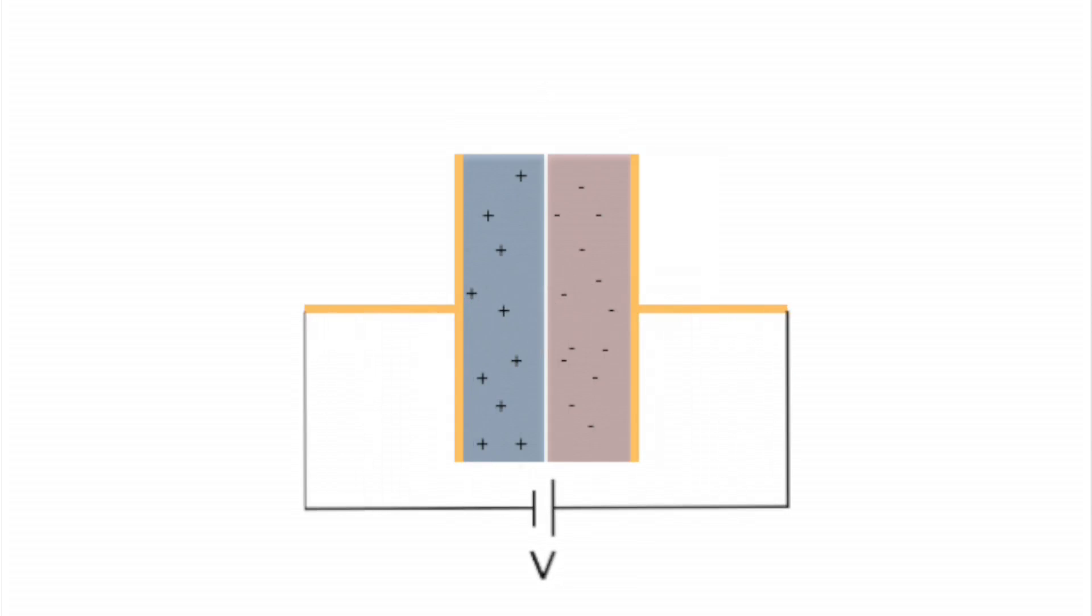But when the applied voltage is reversed, the charge carriers are pulled away from the junction, leaving a depleted region that prevents current flow.